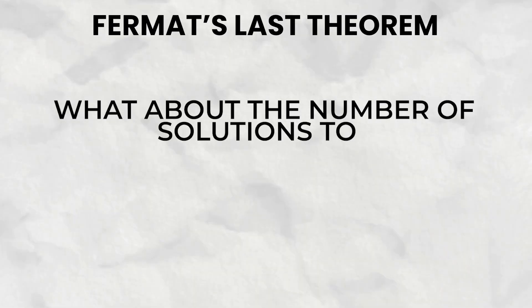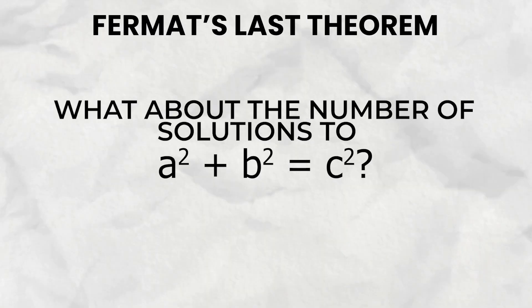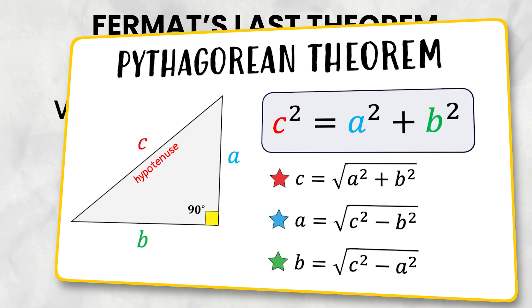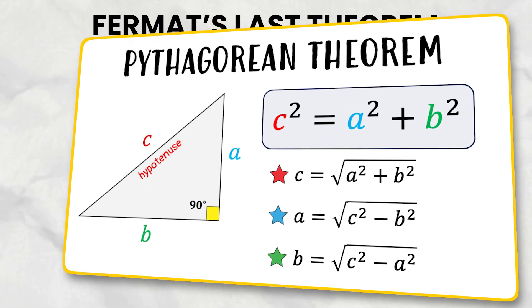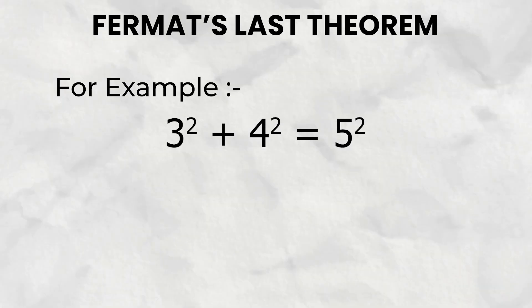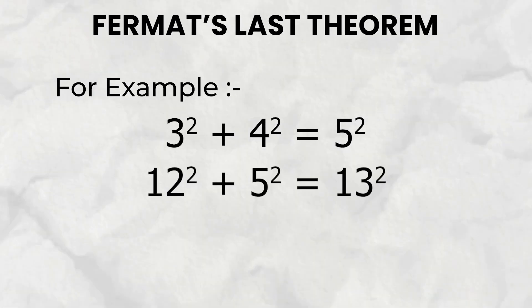What about the number of solutions to a squared plus b squared equals c squared? This is just the Pythagorean theorem, so again it has an infinite amount of solutions, like 3 squared plus 4 squared equals 5 squared, or 12 squared plus 5 squared equals 13 squared.